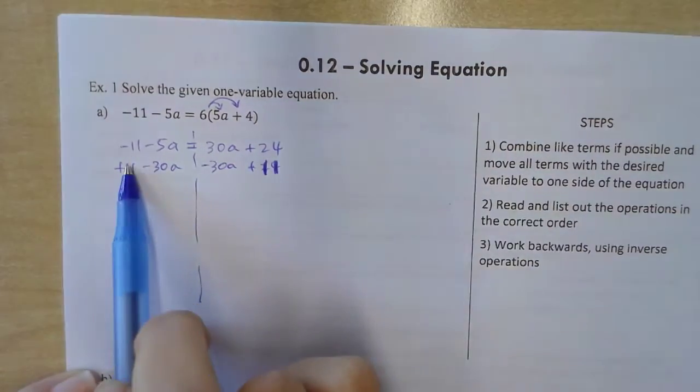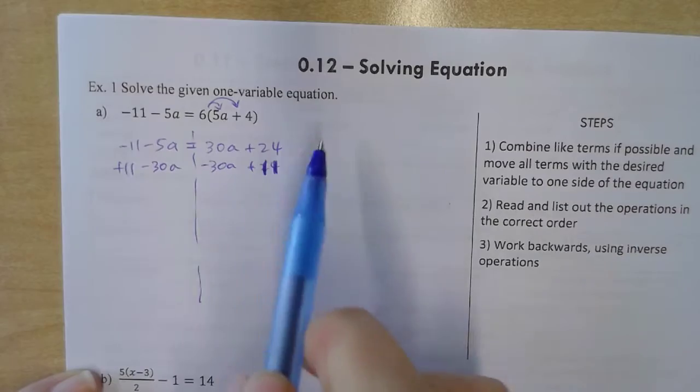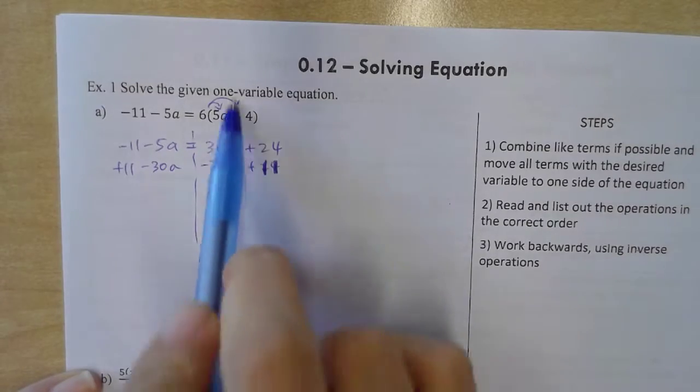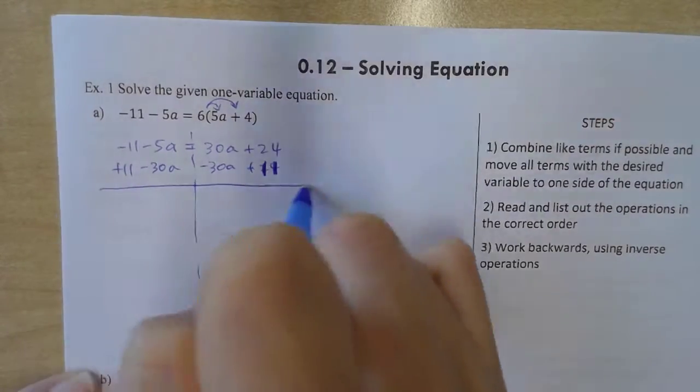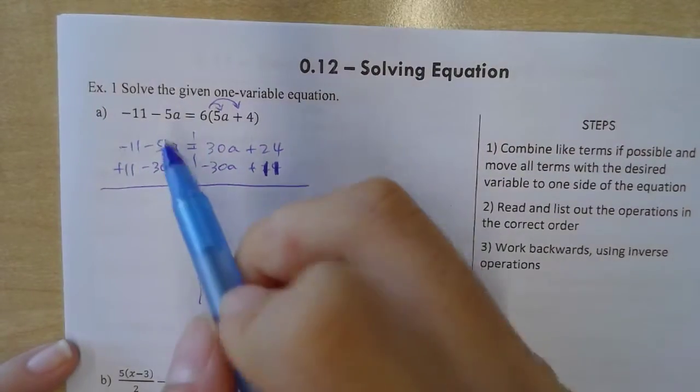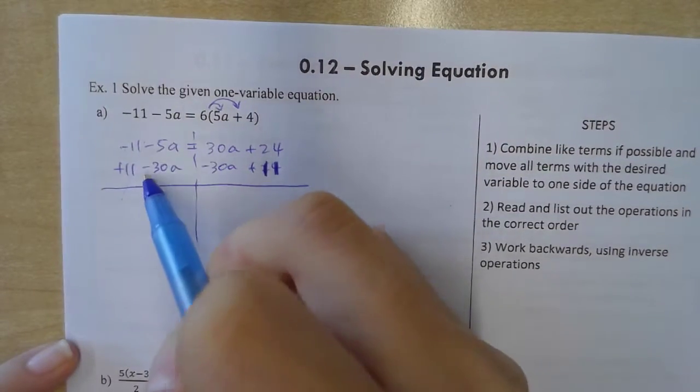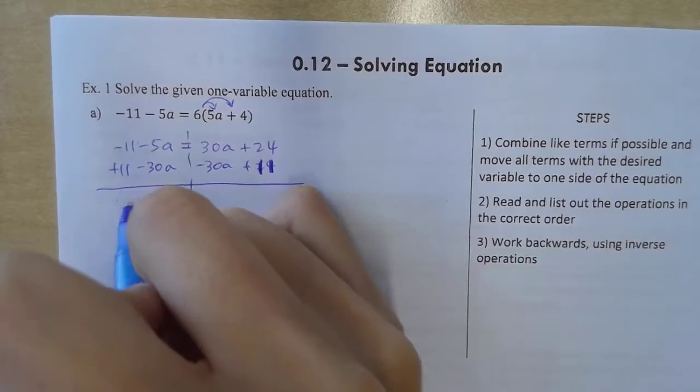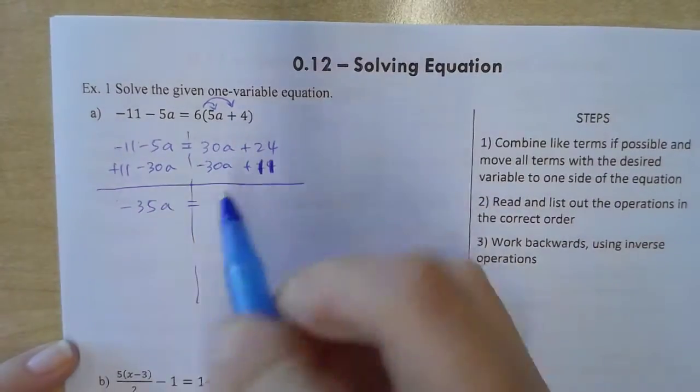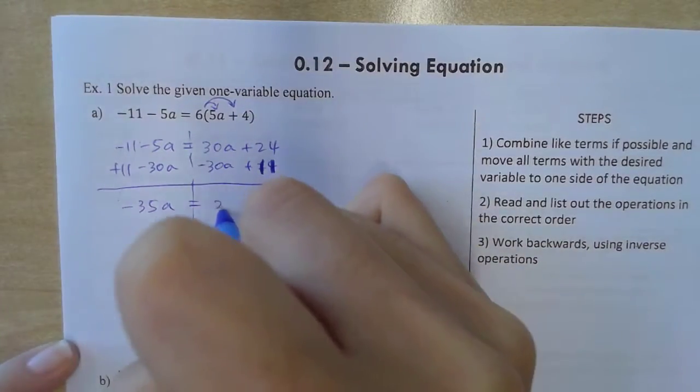Add 11 on both sides. Okay, so I'm moving all the numbers, the terms without variable to one side and then all the terms with the variable on the other side. Okay, listen, if you want to take it step by step, that is totally cool with me. Okay, so this cancels out. I got negative 30 plus negative 35a. Watch out the sign. Cancels out.